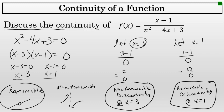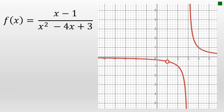If you have access to a graphing utility, this result could be verified. Looking at the graph of f(x) = (x - 1) / (x² - 4x + 3), you can see two gaps in the graph — two breaks where the function is not continuous. One occurs at x = 1, which is a single point removed, known as a removable discontinuity. Additionally, there is a gap at x = 3 that is larger than a single point, coming from a vertical asymptote, and is defined as a non-removable discontinuity.